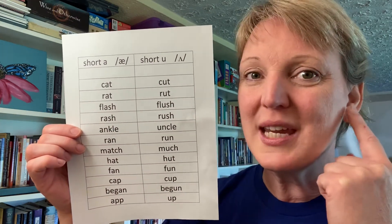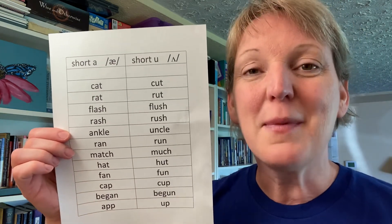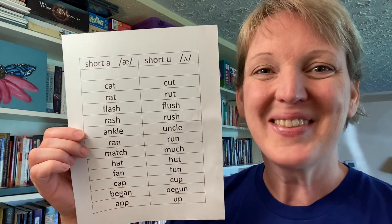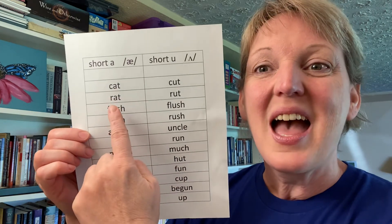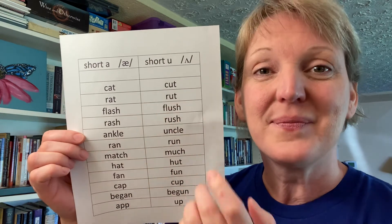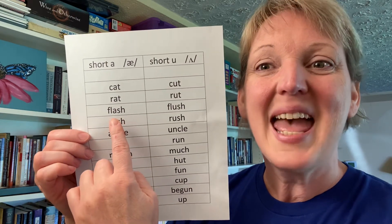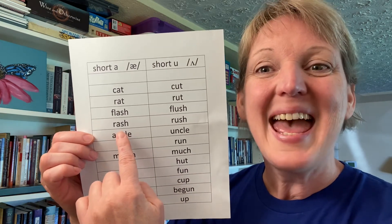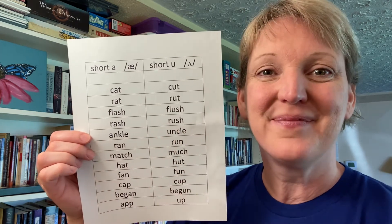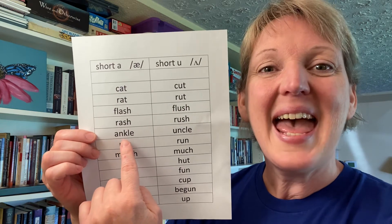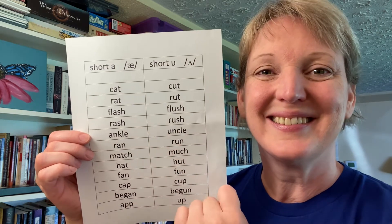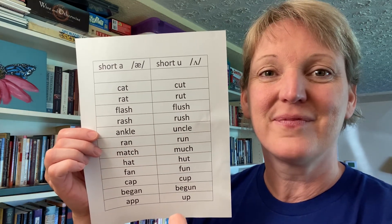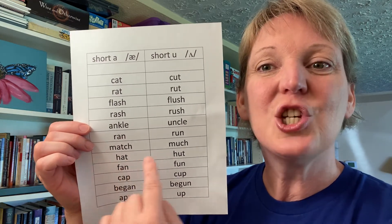Now I'm going to read them across so that you can hear the difference between the two. I'll read them the first time and you repeat after me: A in cat — U in cut. A in rat — U in rut. A in flash — U in flush. A in rash — U in rush. A in ankle — U in uncle. A in ran — U in run. A in match — U in much.